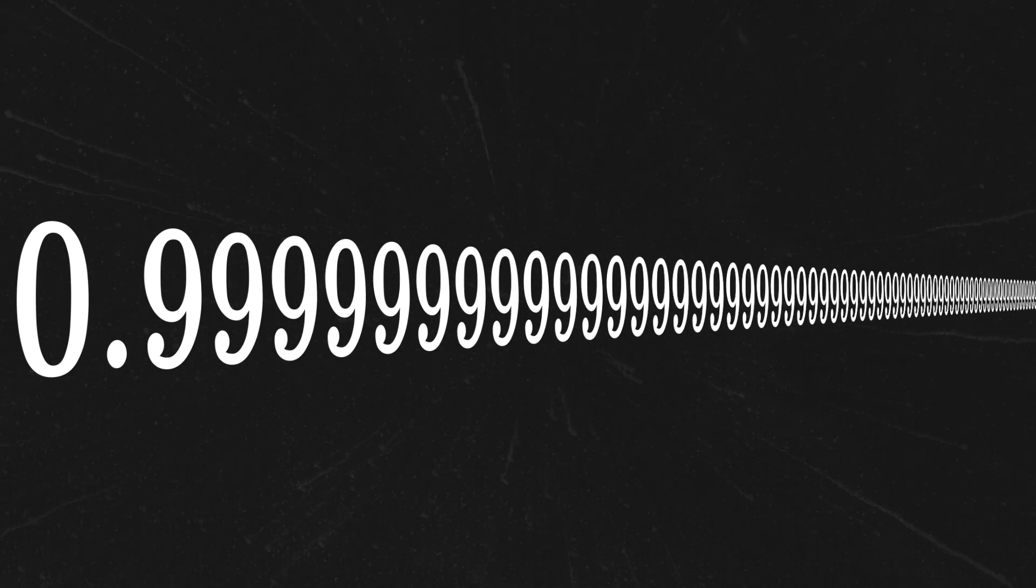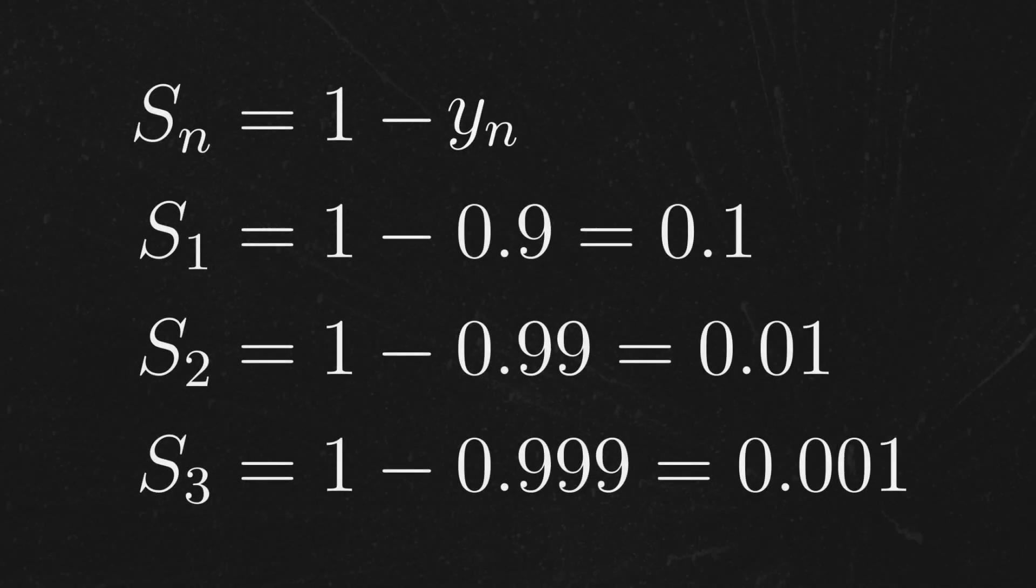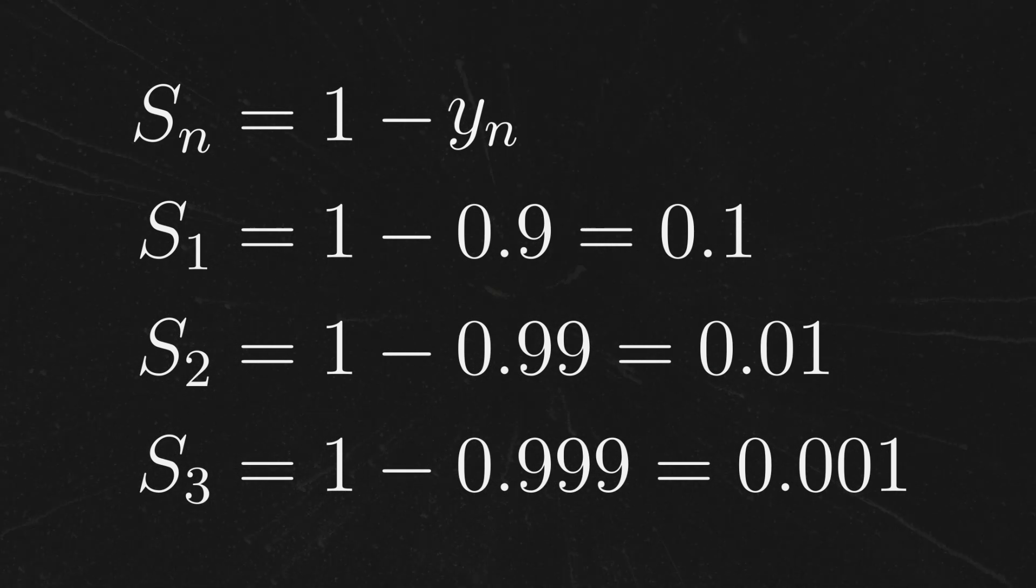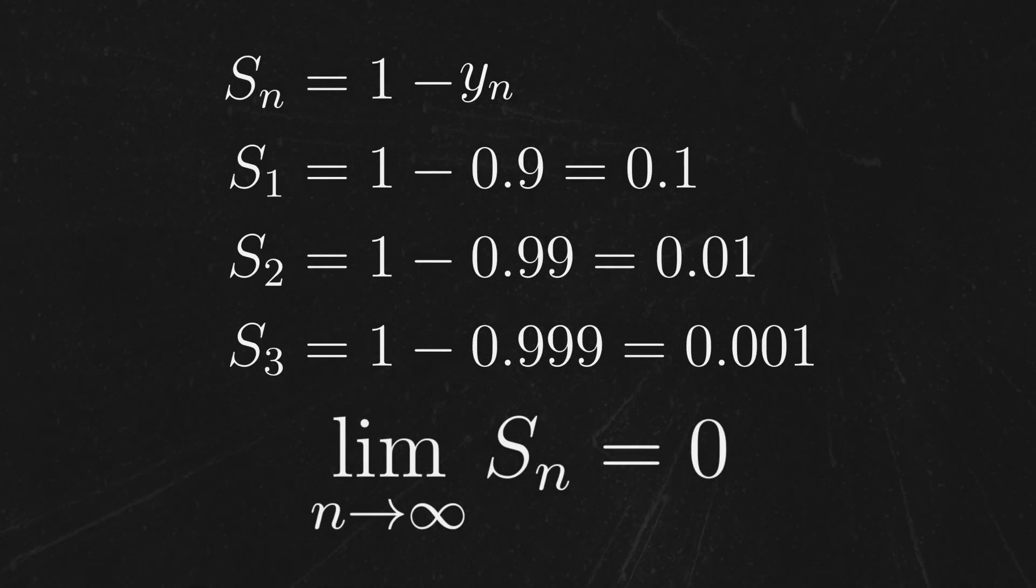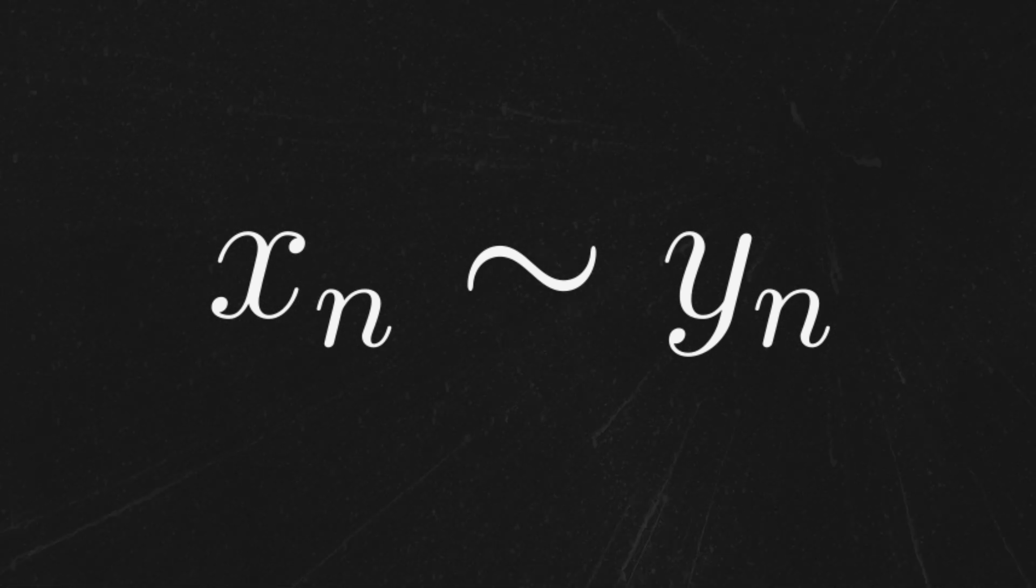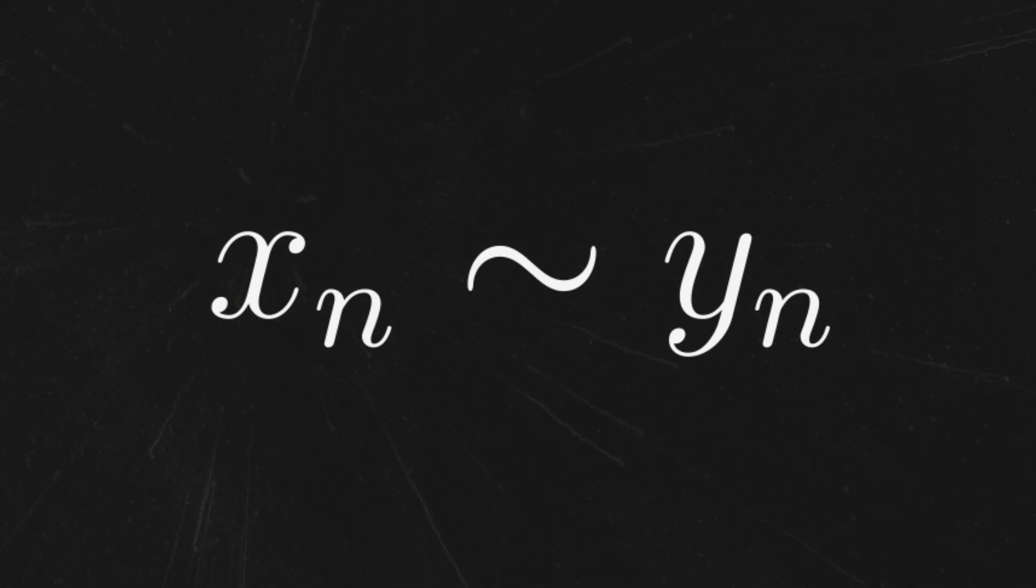Since we know that the constant sequence converges to 1, if we look at the sequence of differences, 1-0.9, 1-0.99, and so on, we can see that it converges to zero. Therefore, by definition, they represent the same real number, which we call 1. That's what 0.999 repeating equals 1 really means.